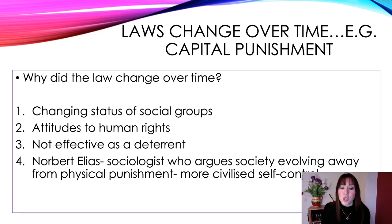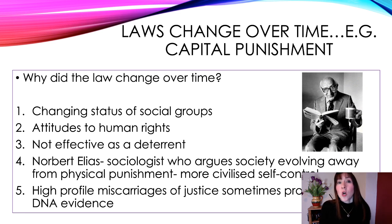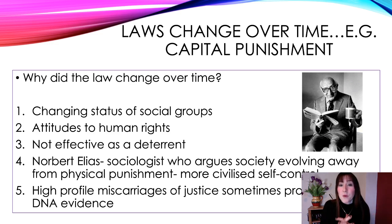Norbert Elias, a sociologist, argues that society evolving away from physical punishment was more civilised and more self-controlled. Also, because of high-profile miscarriages of justice — sometimes proven with DNA evidence — people who had been convicted, sentenced to death, and later found to be innocent, but it was too late. There have been many very high-profile miscarriages of justice.